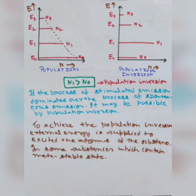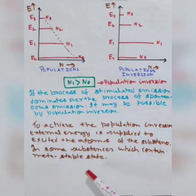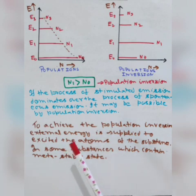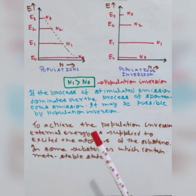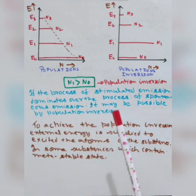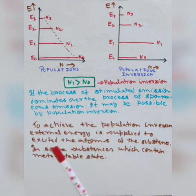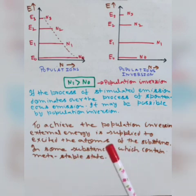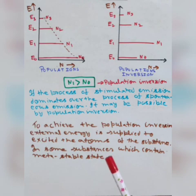To achieve population inversion, we use an external source called pumping. In the case of some substances, a metastable state is also required. For example, in the case of the semiconductor laser, population inversion is achieved simply by pumping, as metastable states play no role. But in the case of ruby and helium-neon lasers, both pumping and a metastable state are required. Without pumping or a metastable state, population inversion cannot be achieved in these types of lasers.